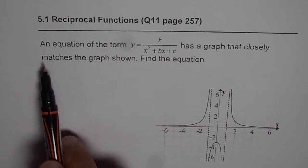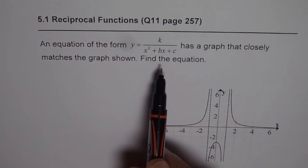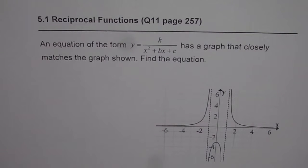It is question 11 page 257 from Nelson Advanced Functions. The question is, an equation of the form y equals k over x square plus bx plus c has a graph that closely matches the graph shown. Find the equation.